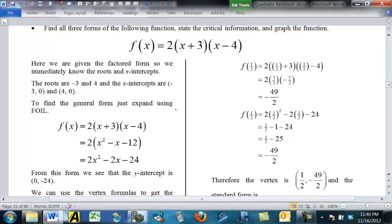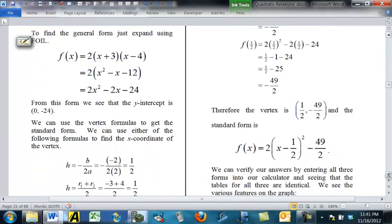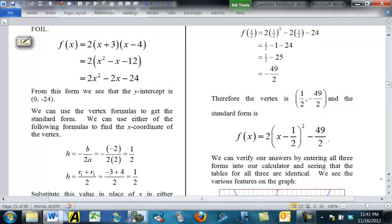You get 2X squared minus 2X minus 24. From that, we can see 0, negative 24 is the Y-intercept. Now, we can use the vertex. Now that we have the general form, we can use the formula H equals minus B over 2A to find,